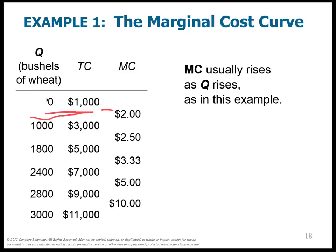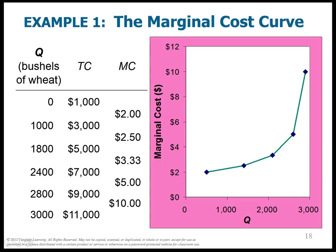When I graph it, we have a marginal cost curve that is getting more and more steep. The marginal cost curve is just the slope of the total cost curve, which is increasing.